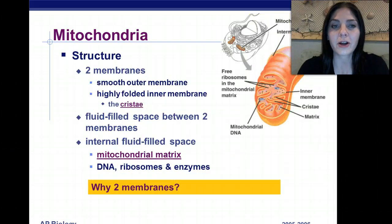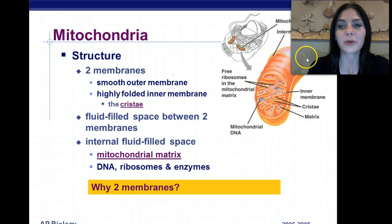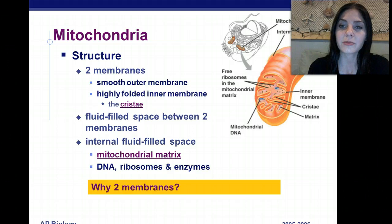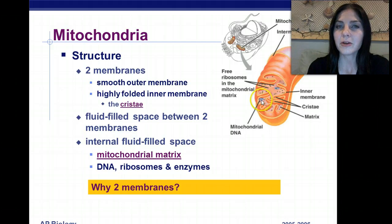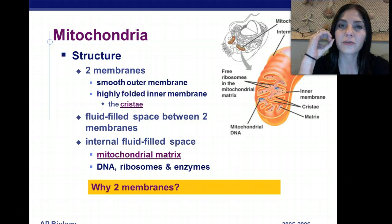The structure of the mitochondria is composed of two membranes: a smooth outer membrane and a highly folded inner membrane. All of the folds in the mitochondria are called cristae. We have a fluid-filled space between the two membranes called the mitochondrial matrix, and it's where the DNA, the ribosomes, and all of the enzymes are located. We have our little ribosomes and mitochondrial DNA, which is very similar to bacterial DNA and occurs in the form of plastids — circular forms of DNA.